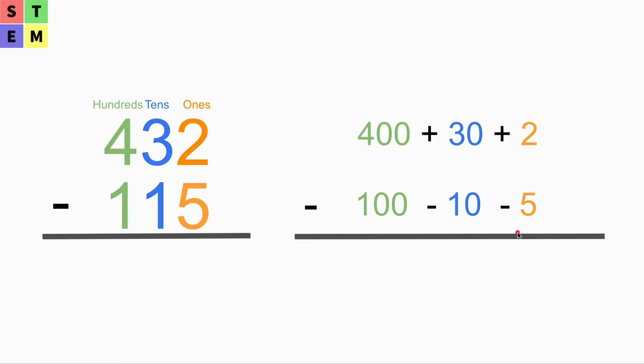What we can do is we can borrow 10 from the tens place. So we have 30 here. If 10 is borrowed, then we have 20 left here.